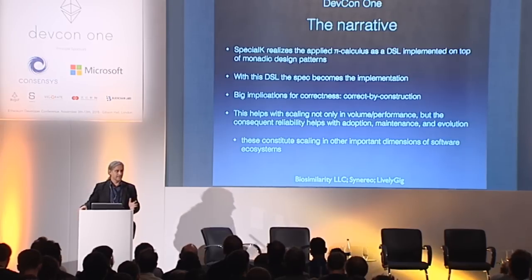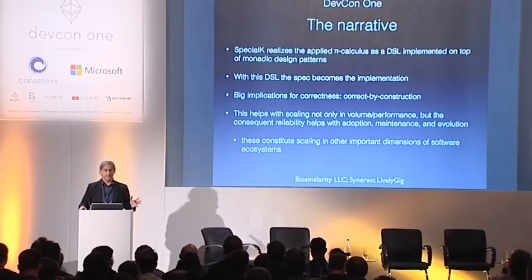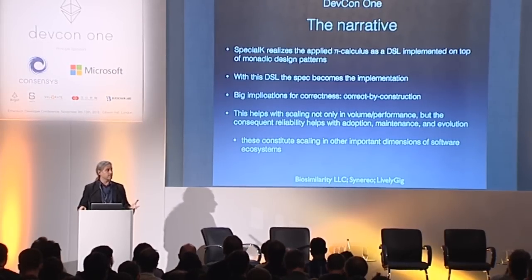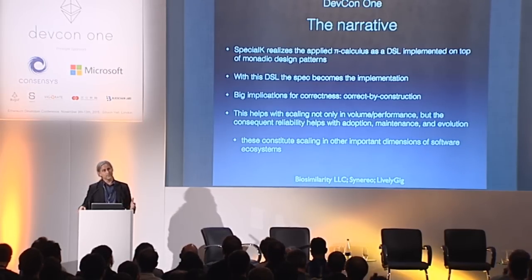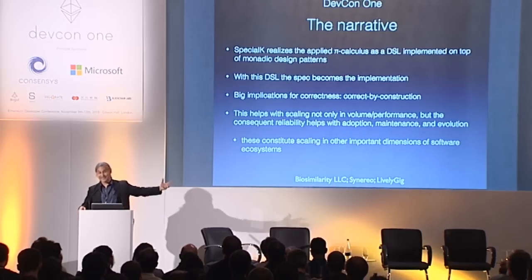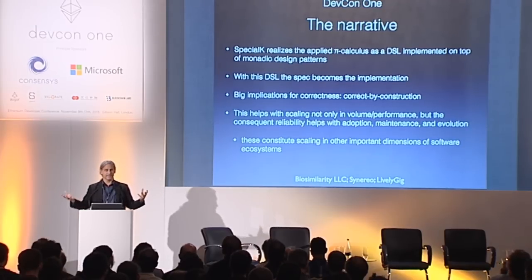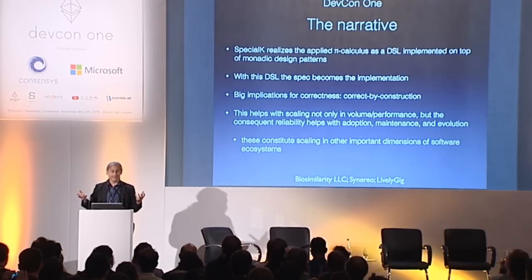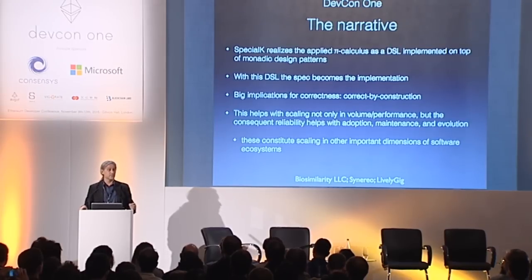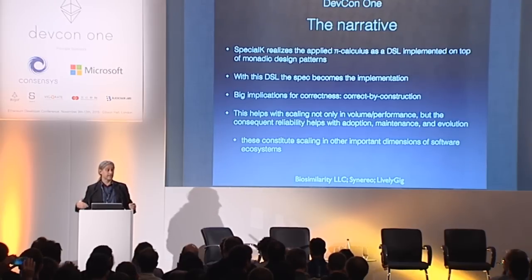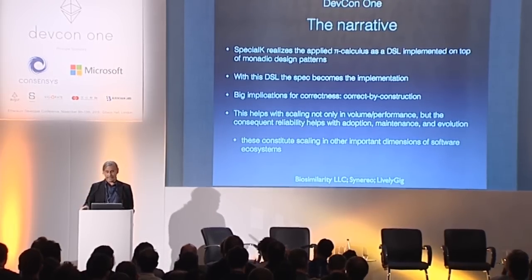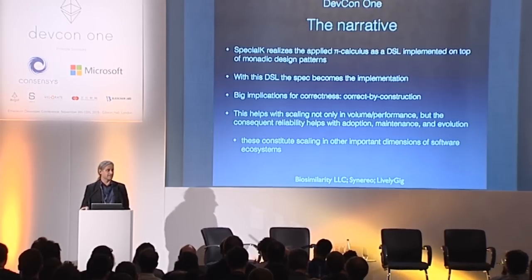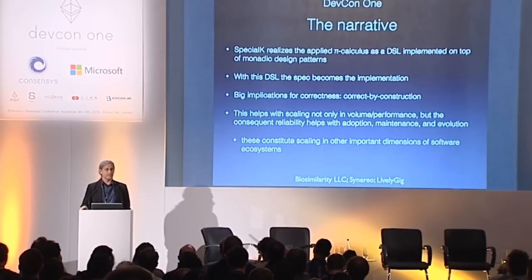If you take on correct by construction, this helps with scaling. There are a lot of different aspects to scaling — it's not just about volume and performance. It's also about reliability, and reliability is what engenders adoption. If you manage a large financial firm, you might be more inclined to take on some of that risk if you knew it had reliability properties that were formally and automatically verified. It also helps with maintenance and evolution, because this space is changing very fast.